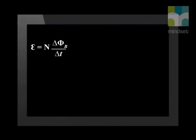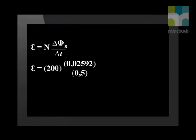Now we calculate the magnitude of the induced EMF. We can leave the negative out of the equation because that determines direction and we are only asked for magnitude or size. Substituting all the values into the equation, we find that the answer is 10.368. This is our final answer, so we will round it off to 10.37 volts.